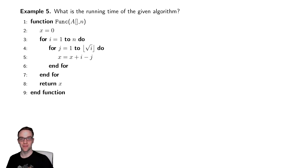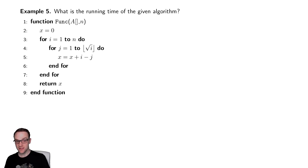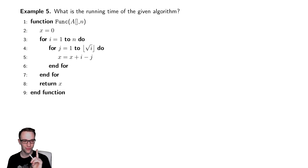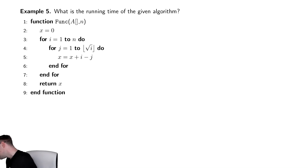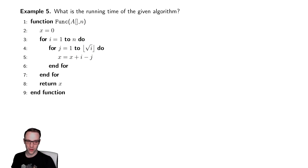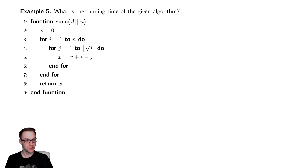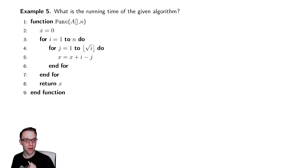For our next example, we have some really similar code. This code, rather than going to i squared, goes to the floor of radical i, which is a little strange. In this video, we're going to see that that floor is mostly a technicality and will be ignored in the future. But for now, we are going to actually keep it in the problem and see how it affects things.